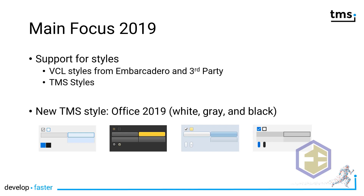As I just mentioned the TMS styles, TMS recently introduced the new Office 2019 style, which is available in three variants: white, grey, and black. And of course grey is available in light grey and normal grey. Here on the bottom of the slide you see the four variations of the style.